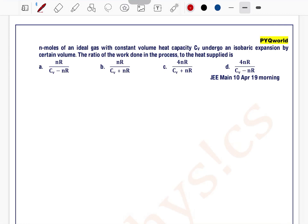N moles of an ideal gas with constant volume heat capacity Cv undergo an isobaric expansion at constant pressure by a certain volume.